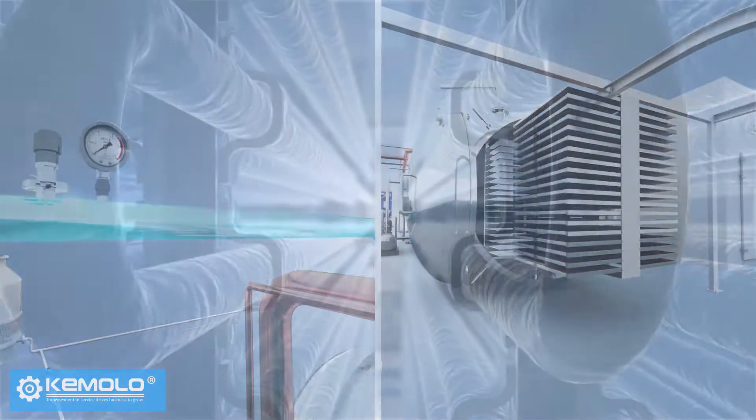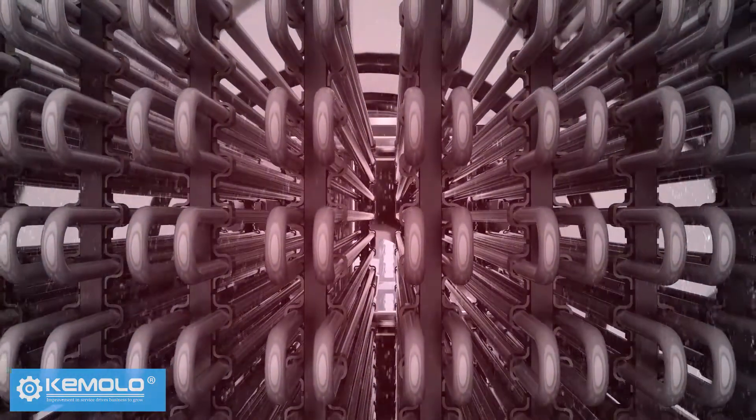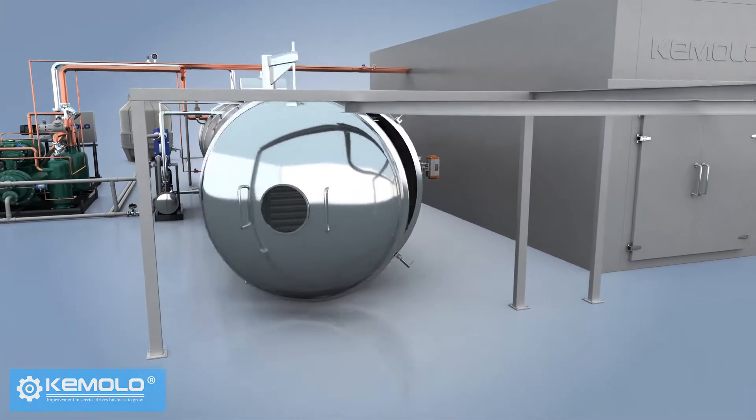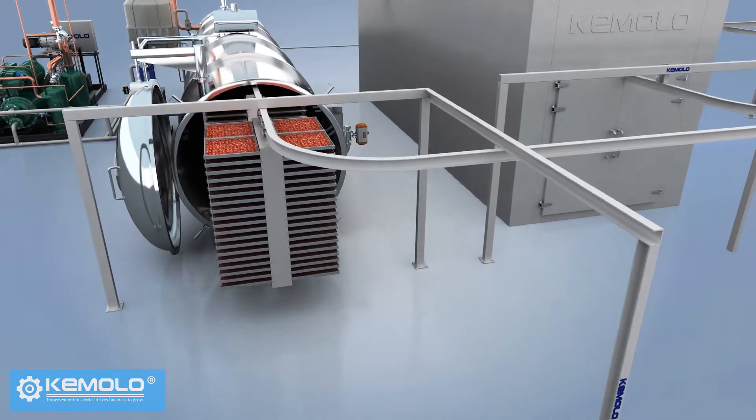After discharging, the frost on the water vapor collector needs to be defrosted for the next batch of production. Therefore, the freeze drying must be produced in batches and the interval between each batch is about 1-2 hours.